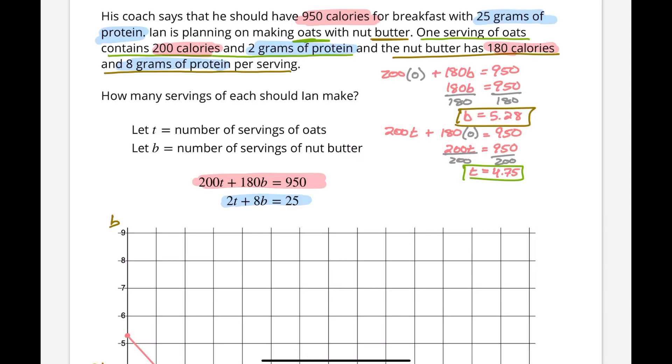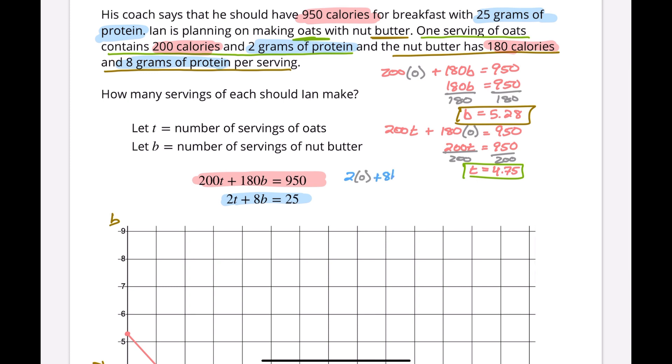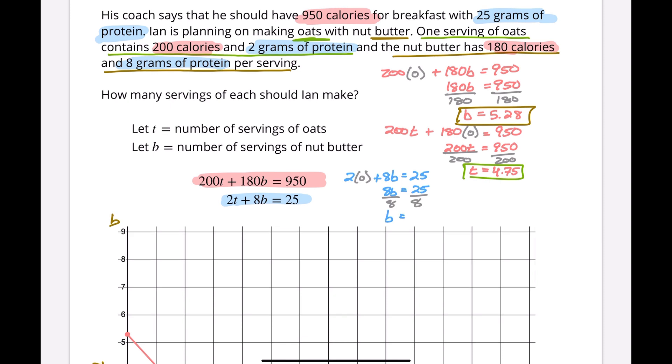Now we have to do the same thing for our protein equation. So we have 2 times 0 plus 8b equals 25. The 2 times 0 goes away, so 8b equals 25. We divide by 8, and b equals 3.125.